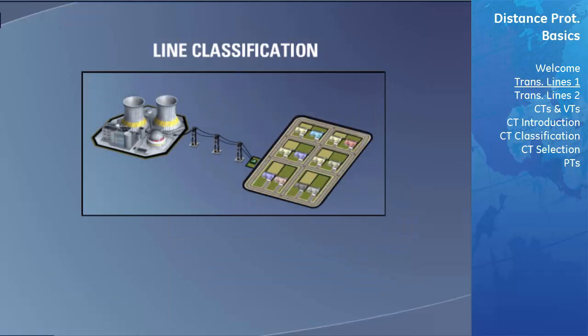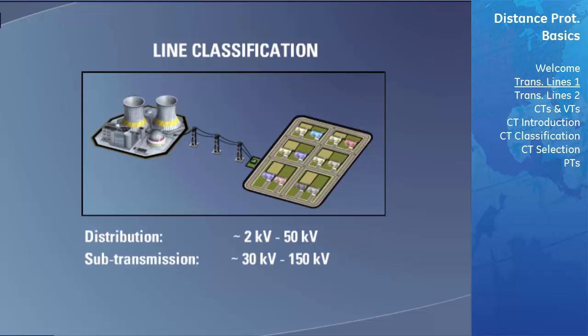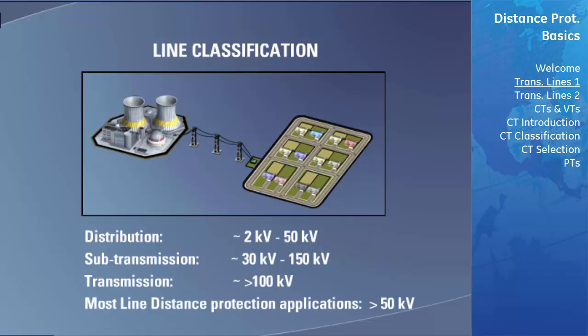The voltages used for transmission of power over transmission lines are split into three categories. Distribution levels are in the range of 2 kilovolts to 50 kilovolts. Sub-transmission levels are in the range of 30 kilovolts to 150 kilovolts. Transmission levels are greater than 100 kilovolts. Most applications that use distance protection are 50 kilovolts or greater.